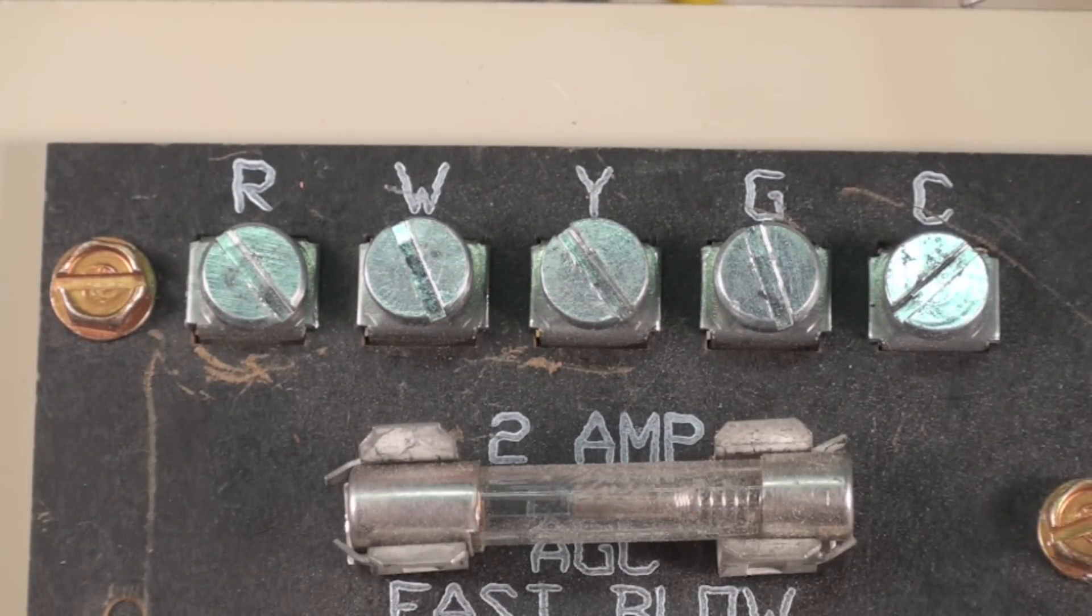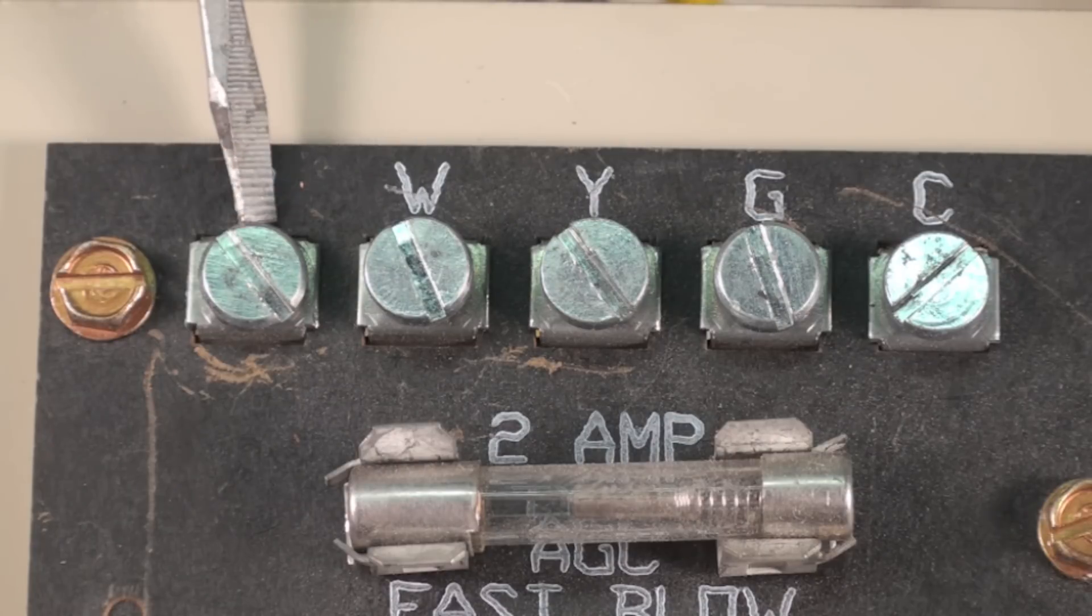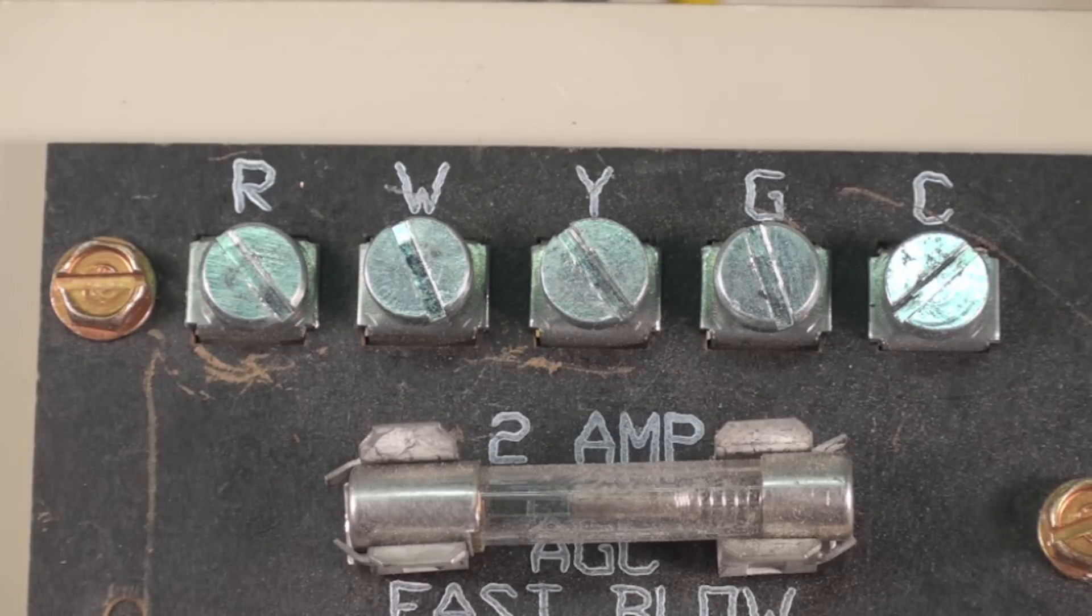I'd start out with C and R. That's low voltage power. If I want to know if there's power to this, 24 volts, I would go from R to C. That would tell me that the 24 volt power source is working.